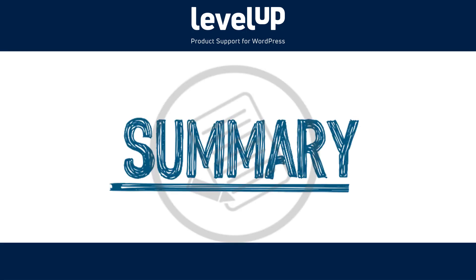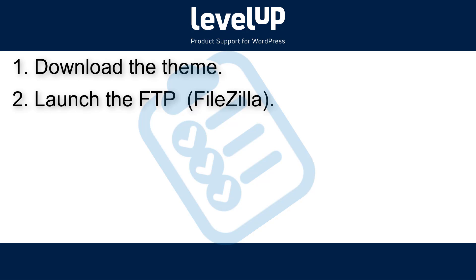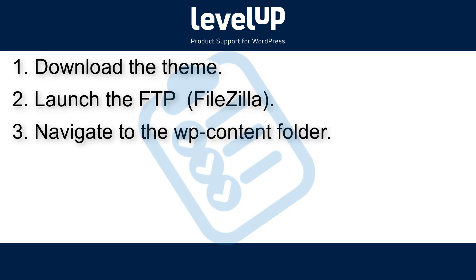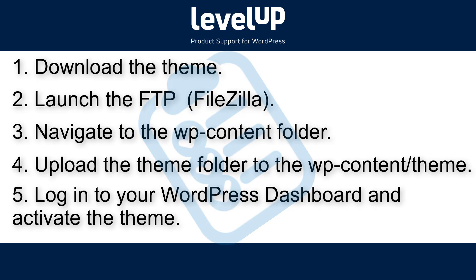And for a summary, here is how to install a theme manually via FTP: Download the theme. Launch the FTP client FileZilla. Navigate to the wp-content folder. Upload the theme folder to wp-content/themes. Then log in to your WordPress dashboard and activate the theme.